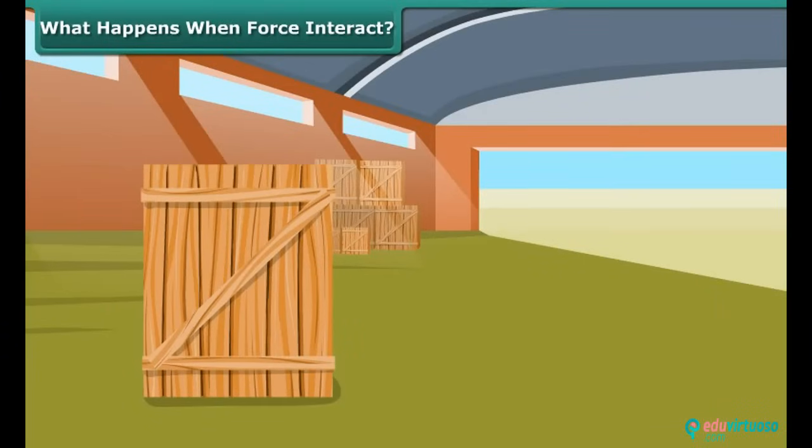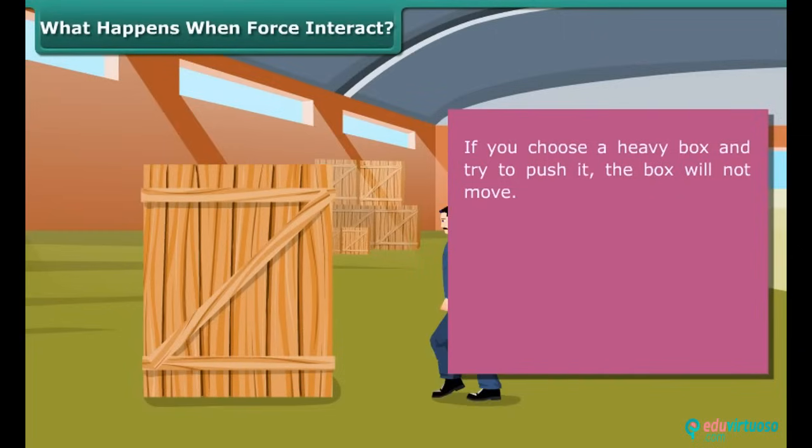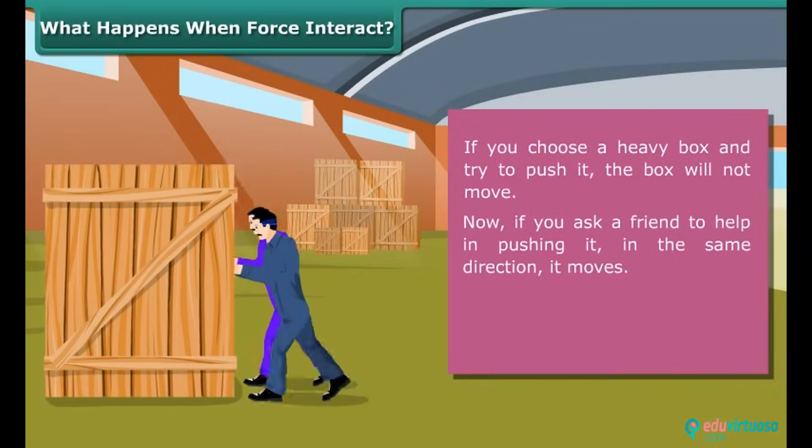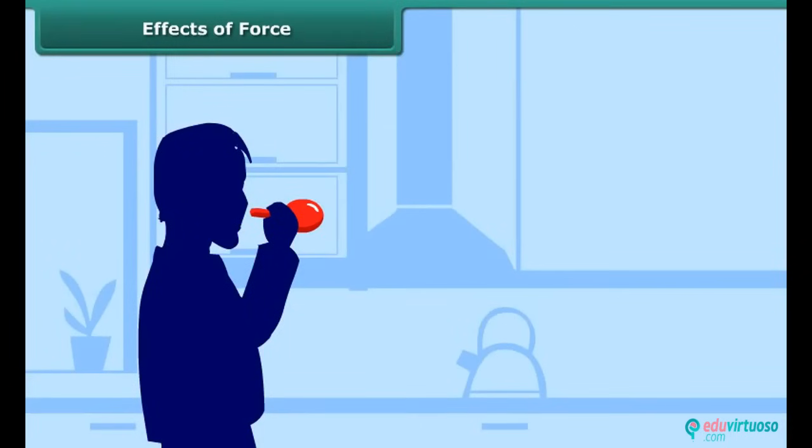What happens when force interact? If you choose a heavy box and try to push it, the box will not move. Now if you ask a friend to help in pushing it in the same direction, it moves. This experiment proves that the forces are acting in the same direction.